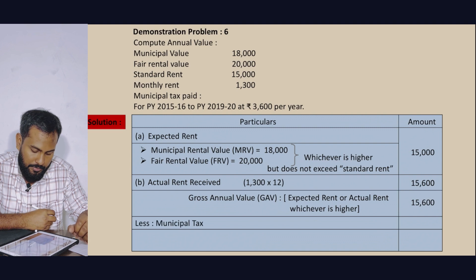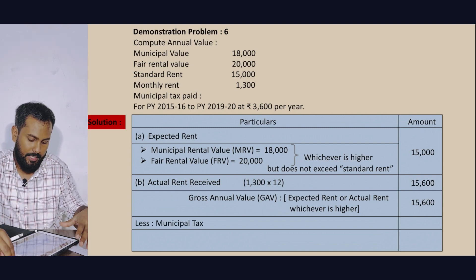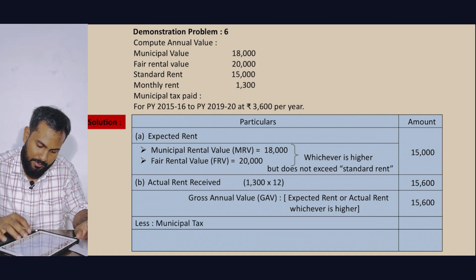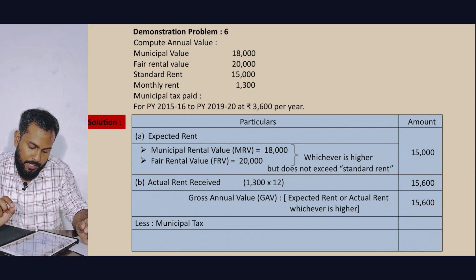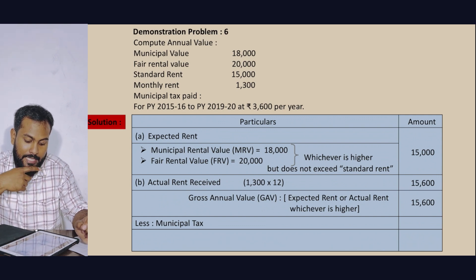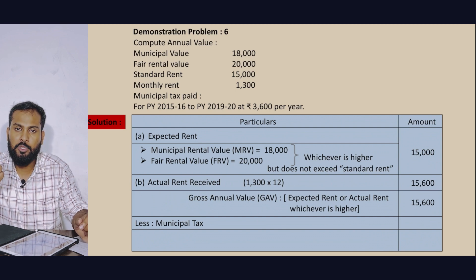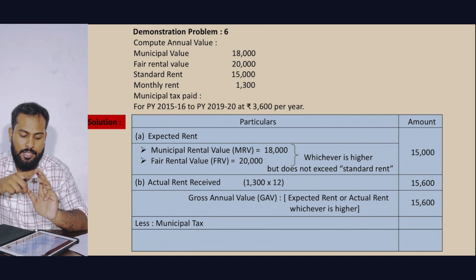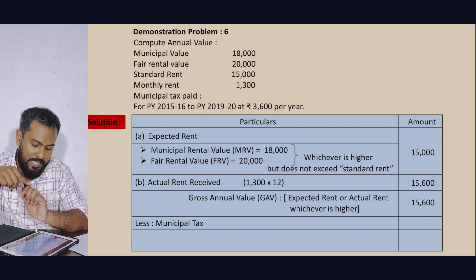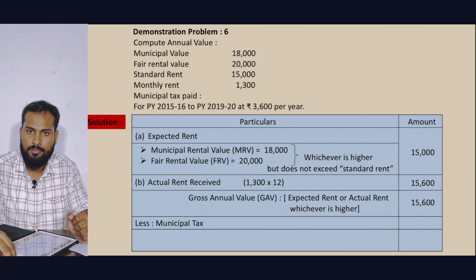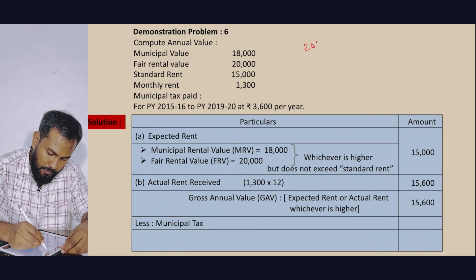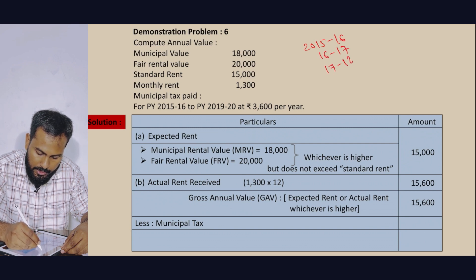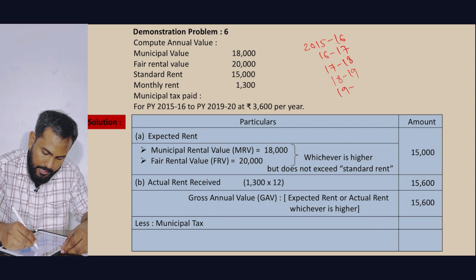Municipal Tax for the previous year is 2,000. However, the landlord also pays arrears from prior years (e.g., 2015–16 through 2019–20 — five years of accumulated municipal tax). Municipal tax accumulated over 5 years: 3,600 × 5 = 18,000.